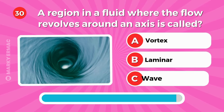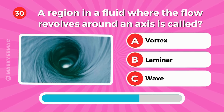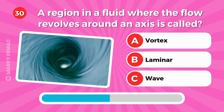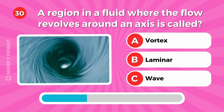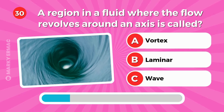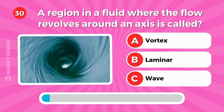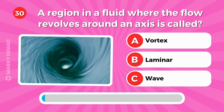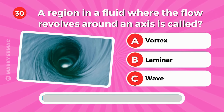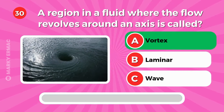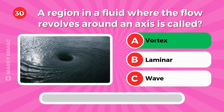A region in a fluid where the flow revolves around an axis is called — vortex, laminar, or wave? It's vortex.